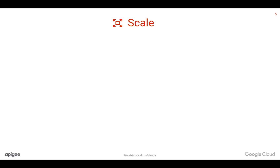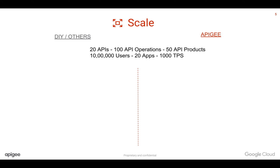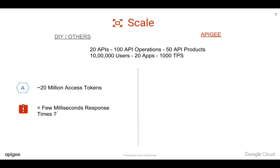The next advantage of using Apigee Edge as an OAuth 2.0 authorization server is scale. Let's take a simple example. Say you have 20 APIs with 100 API operations, packaged into 50 API products. A million users are accessing your services using 20 different applications, and on average you get around 1,000 TPS. Think about storing approximately 20 million access tokens and being able to verify a single access token — whether it belongs to the right application and is trying to access the right API it is entitled to — within a few milliseconds.